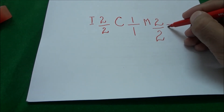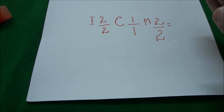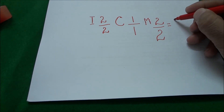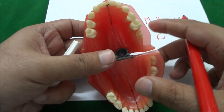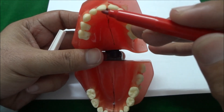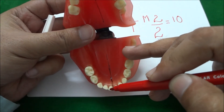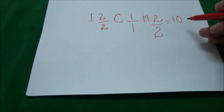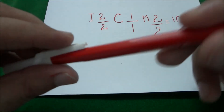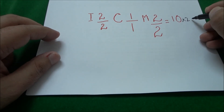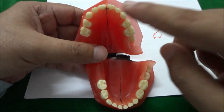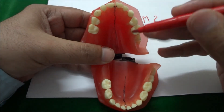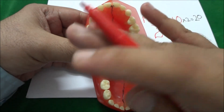The total number of teeth on the right side — the maxillary right quadrant and the mandibular right quadrant combined — will be ten: one, two, three, four, five on top and one, two, three, four, five on the bottom. Sometimes the general formula is written multiplied by two, which equals twenty, because they have included the quadrants of the left side as well.